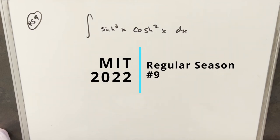Hey, I've got another integral here today. This one's from MIT Integration B 2022 regular season problem number nine. We have the integral of sinh cubed x times cosh squared x dx.